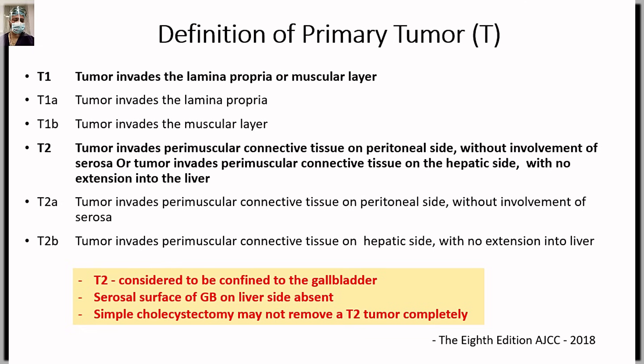T2 is still confined to the gallbladder and is divided into T2A and T2B. As a memory aid: A is anterior (peritoneal side) and B is back (hepatic side) — and B is also bad. T2A is tumor invading perimuscular connective tissue on the peritoneal side with serosa intact. T2B is tumor invading perimuscular connective tissue on the hepatic side with no extension into liver, meaning it has breached the cystic plate. T2B has a worse prognosis, and simple cholecystectomy is not sufficient — completion extended cholecystectomy is required after incidental gallbladder cancer.